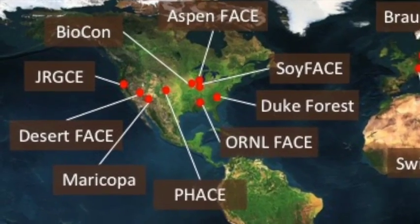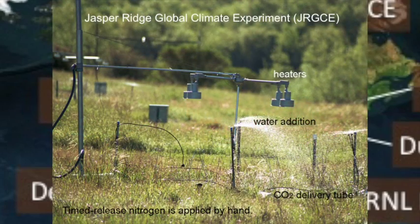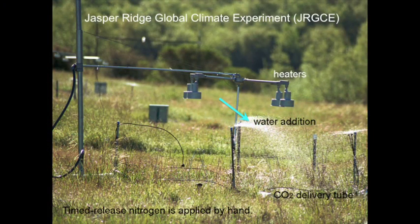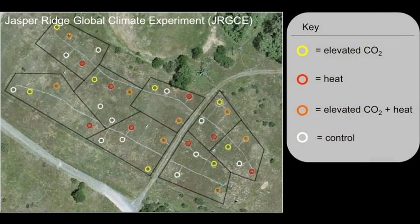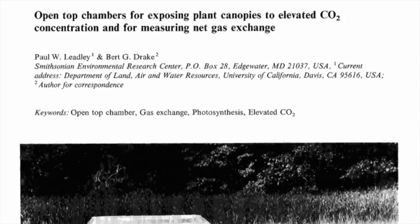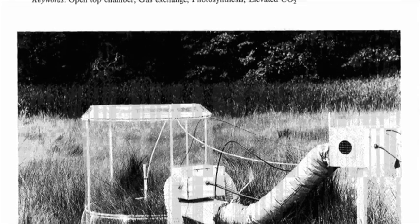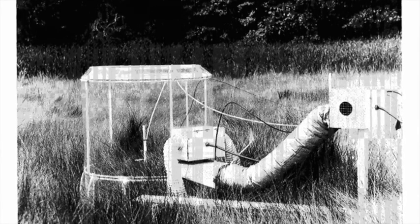At the Jasper Ridge Global Climate Experiment, run by scientists at Stanford University in California, treatments included elevated carbon dioxide, warming, moisture, and nitrogen deposition. Replicating all of these treatments in a factorial design resulted in 32 individual plots, each with four quadrants. You can see how adding treatments to these experiments can quickly increase the amount of infrastructure and funding required. In many cases, constraints on infrastructure and funding make it more feasible to test effects of elevated carbon dioxide and other factors using open-top chambers rather than setting up FACE experiments.